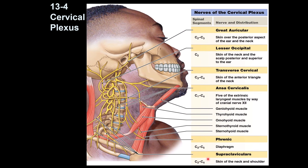Another sensory branch is the supraclavicular nerve, located above the clavicle. It supplies the posterior lateral side of the neck and the upper part of the shoulder — the area known as the posterior triangle of the neck.